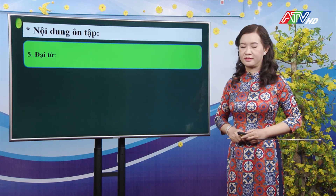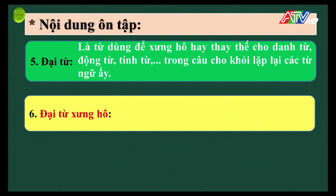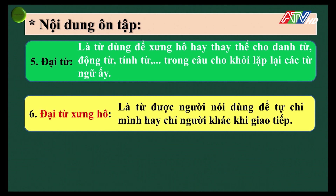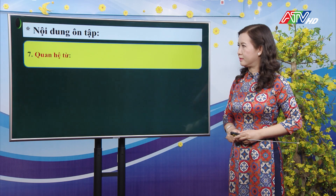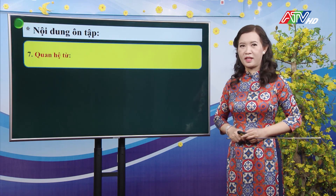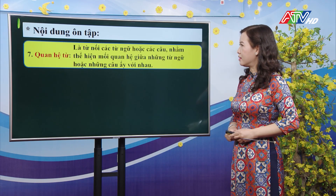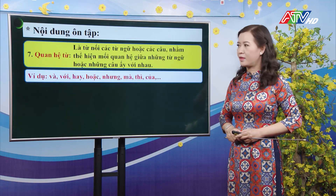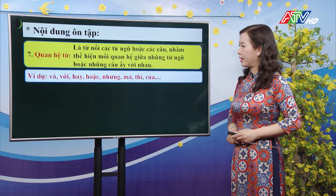Đại từ là từ dùng để xưng hô hay thay thế cho danh từ, động từ, tính từ trong câu cho khỏi lặp lại các từ ngữ ấy. Đại từ xưng hô là từ được người nói dùng để tự chỉ mình hay chỉ người khác khi giao tiếp — ví dụ: ông, bà, anh, chị, em. Quan hệ từ là từ nối các từ ngữ hoặc các câu nhằm thể hiện mối quan hệ giữa những từ ngữ hoặc câu ấy với nhau — ví dụ: và, với, hay, hoặc, nhưng, mà, thì, của.